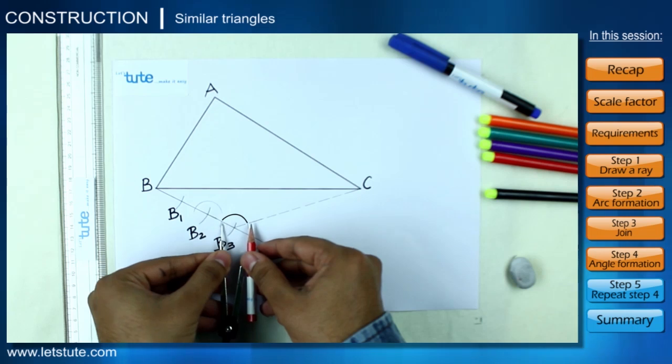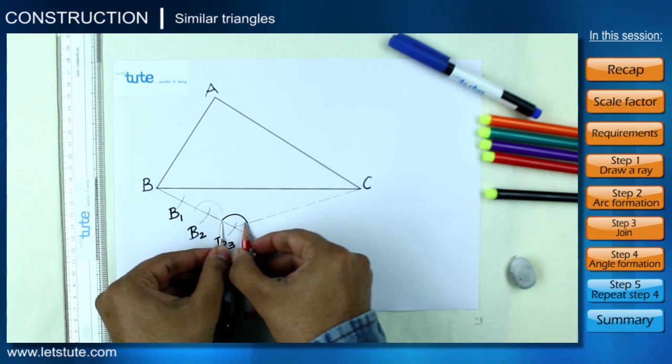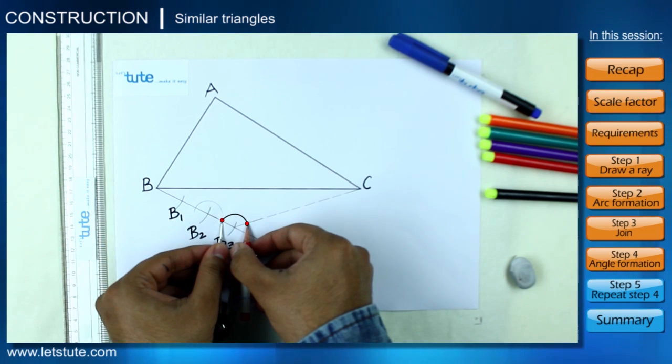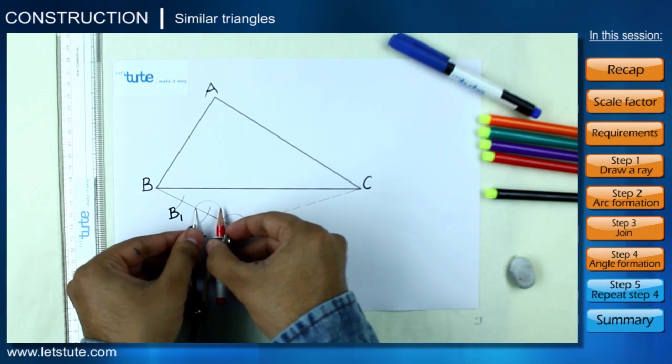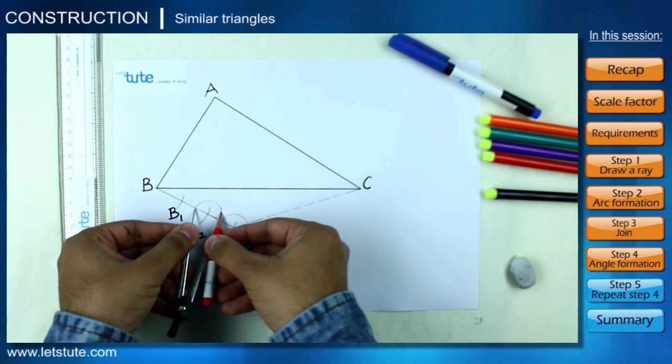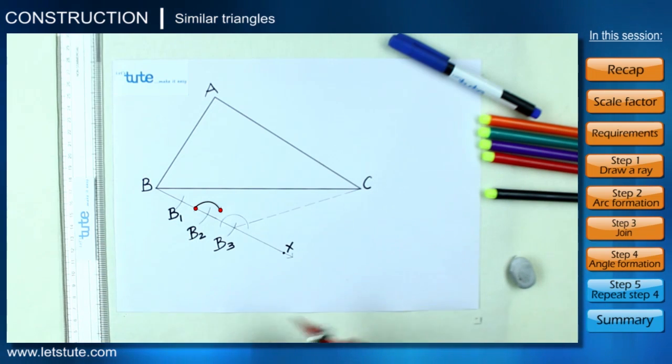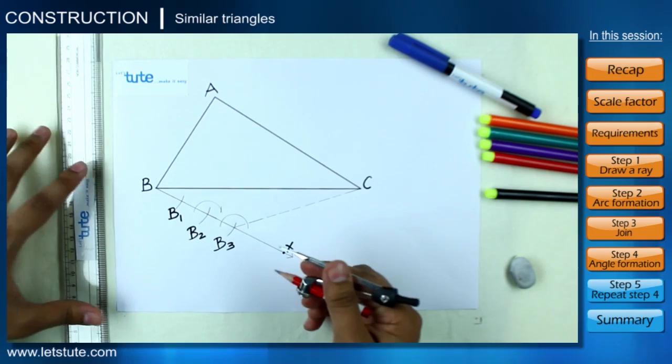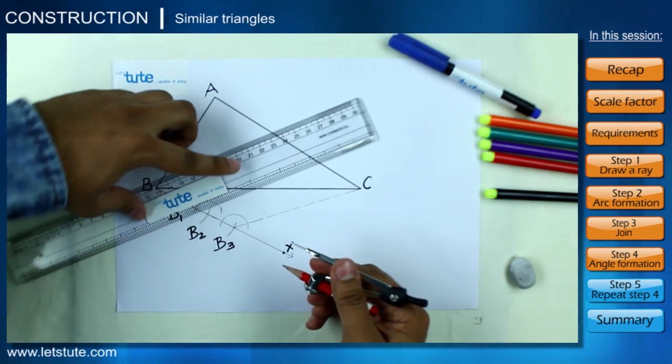Now come back to the arc we made earlier from B3 and measure the length of the arc from the point it touches BX to the point it touches B3C. Keep the same measurement intact on the compass, cut another arc on the arc we made from the point B2.